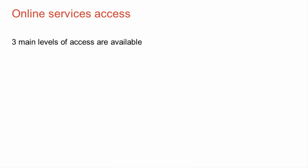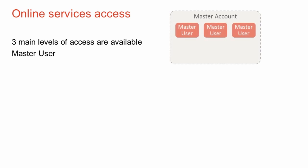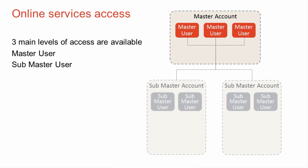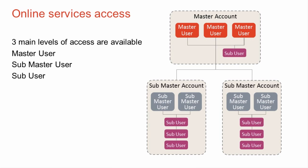There are three main levels of access available in our structure. These comprise of a master user sitting inside a master account, a submaster user sitting inside a submaster account, and subusers that can sit in any of those accounts. Paperwork is required by way of a form to be filled out for the master user and the submaster user to create the master account and submaster account structures.